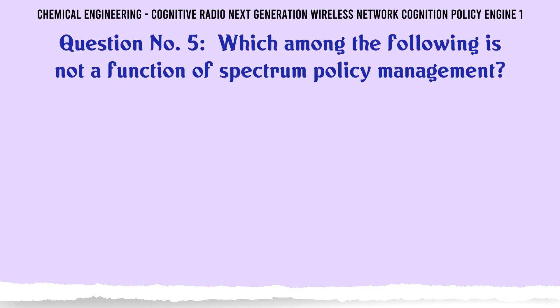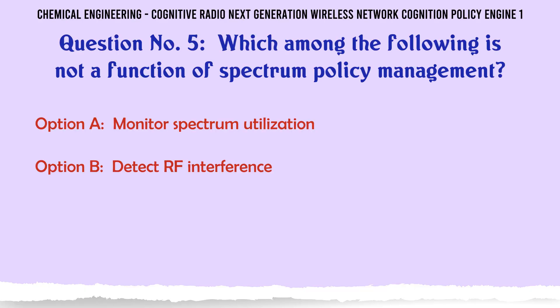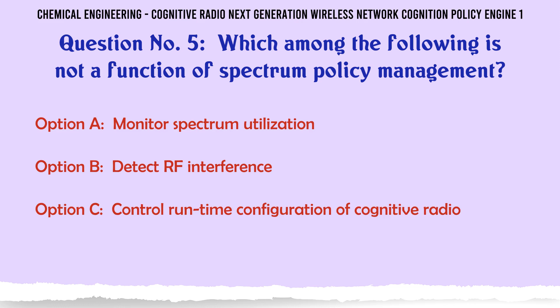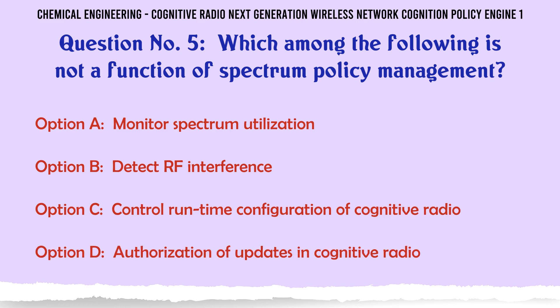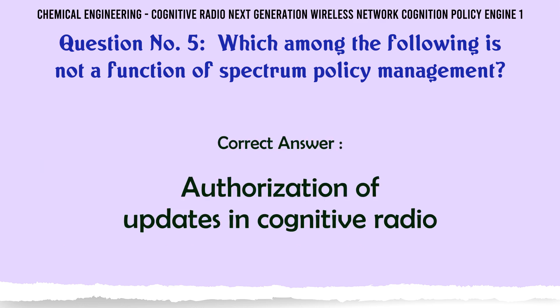Which among the following is not a function of Spectrum Policy Management? a. Monitor Spectrum Utilization. b. Detect RF Interference. c. Control Runtime Configuration of Cognitive Radio. d. Authorization of Updates in Cognitive Radio. The correct answer is: Authorization of Updates in Cognitive Radio.